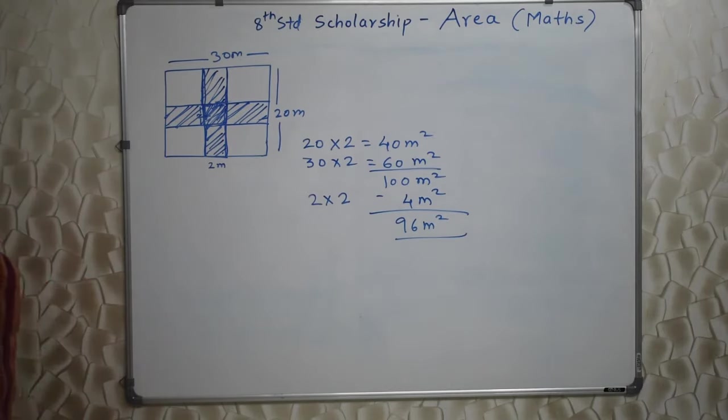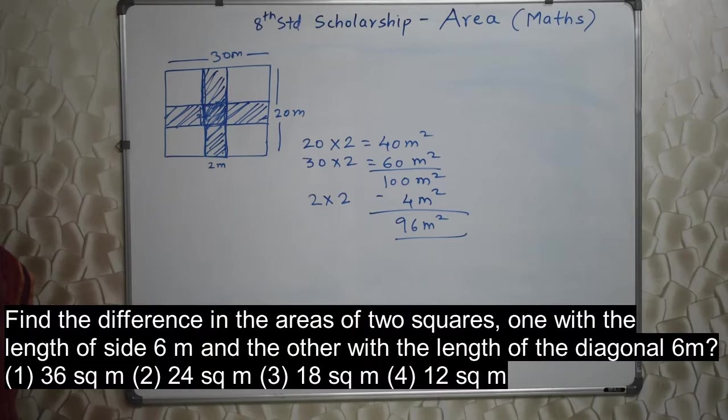Let's go ahead students. Let's read the next sum. Find the difference in the areas of 2 squares, one with the length of side 6 meter and the other with the length of the diagonal 6 meter.